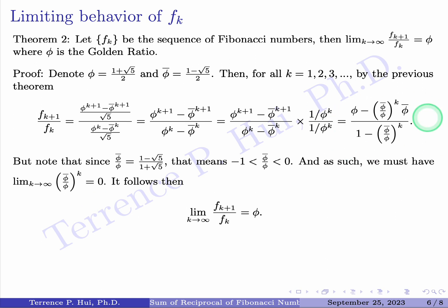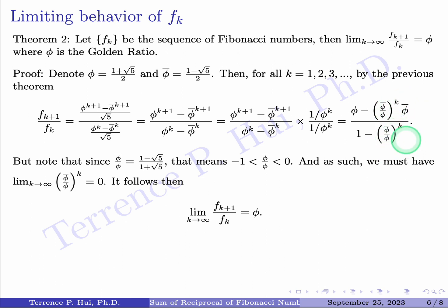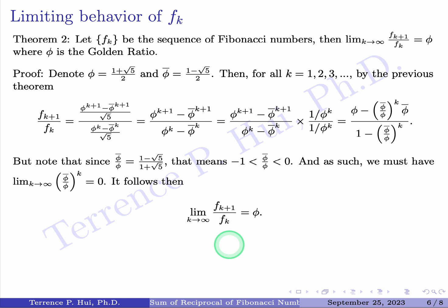Going back to our ratio expression, as k → ∞ the term (φ̄/φ)^k → 0. So the numerator becomes φ − 0 = φ and the denominator becomes 1 − 0 = 1. Therefore lim_{k→∞} F_{k+1}/F_k = φ. Theorem 2 is now proved.